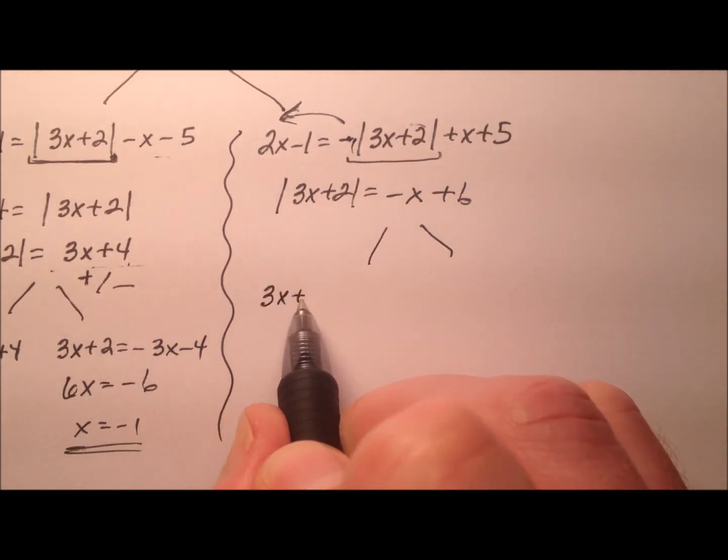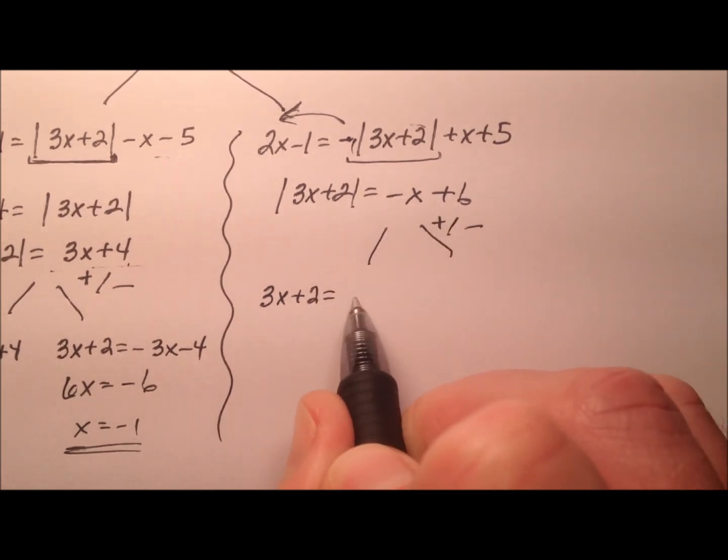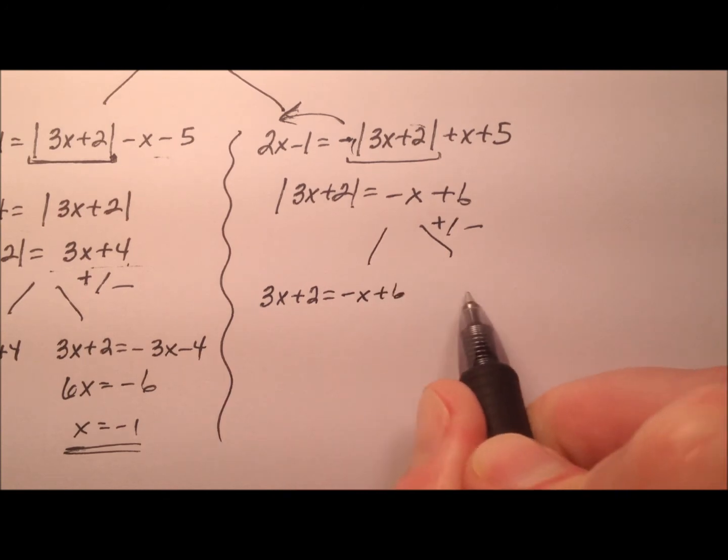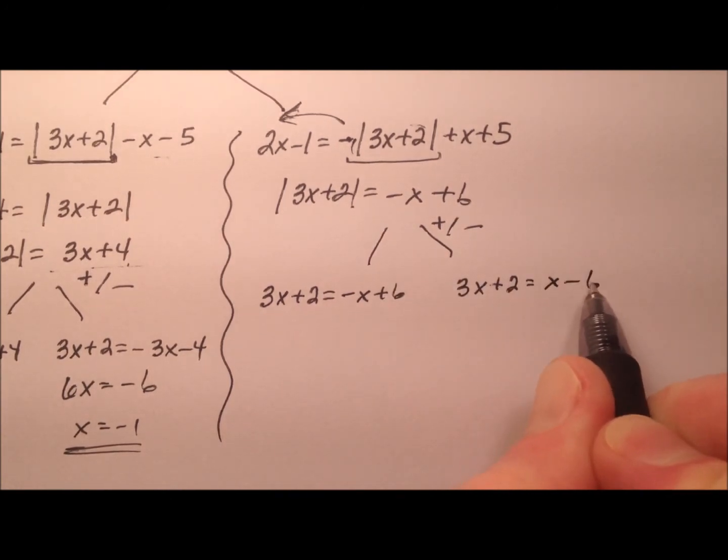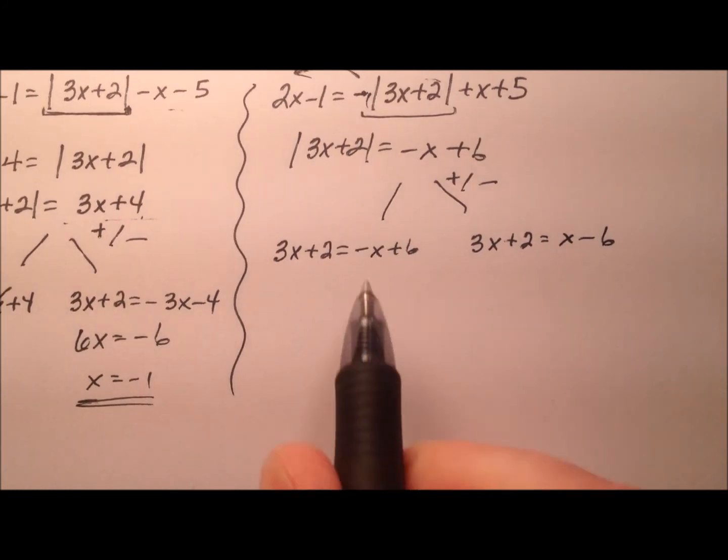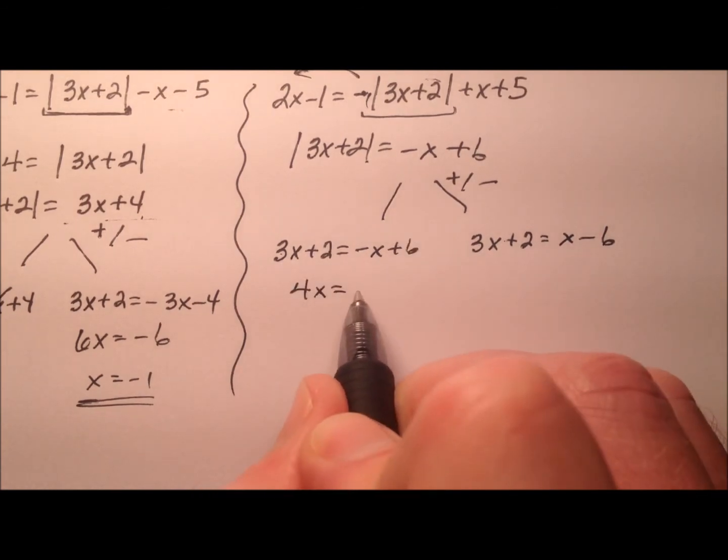So we'll say 3x plus 2 equals the positive version and the negative version. So negative x plus 6 and then 3x plus 2 equals positive x minus 6. Let's solve both of these equations. So add x so 4x equals and then subtract 2